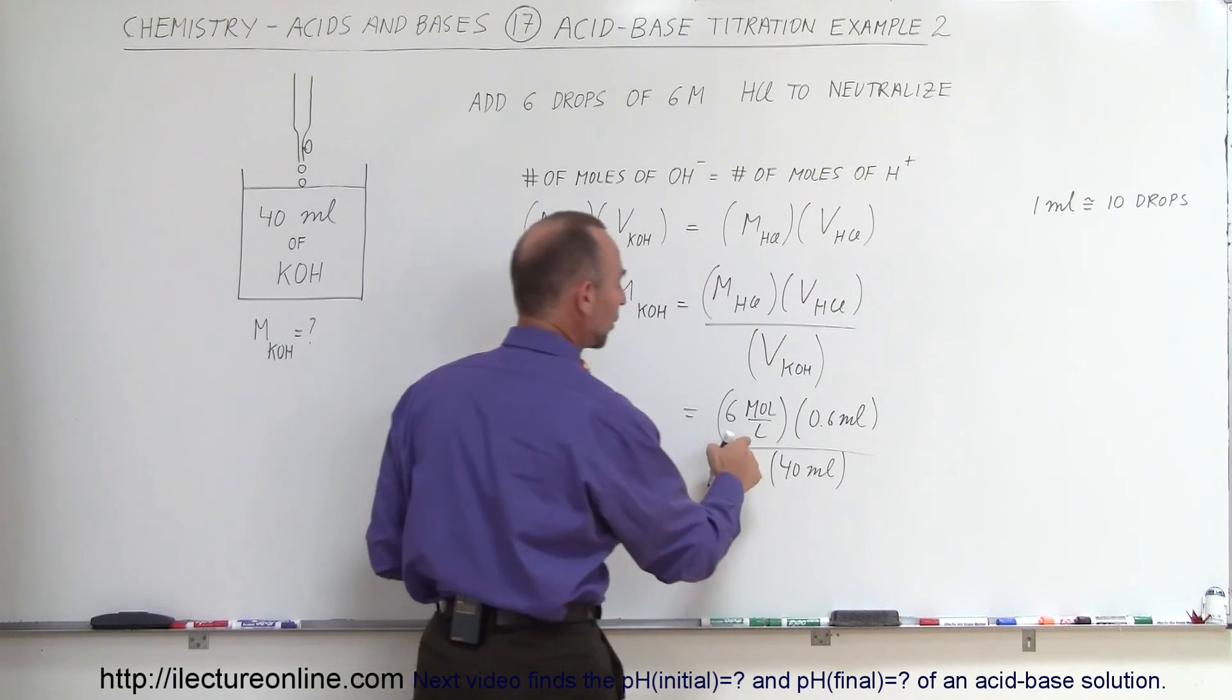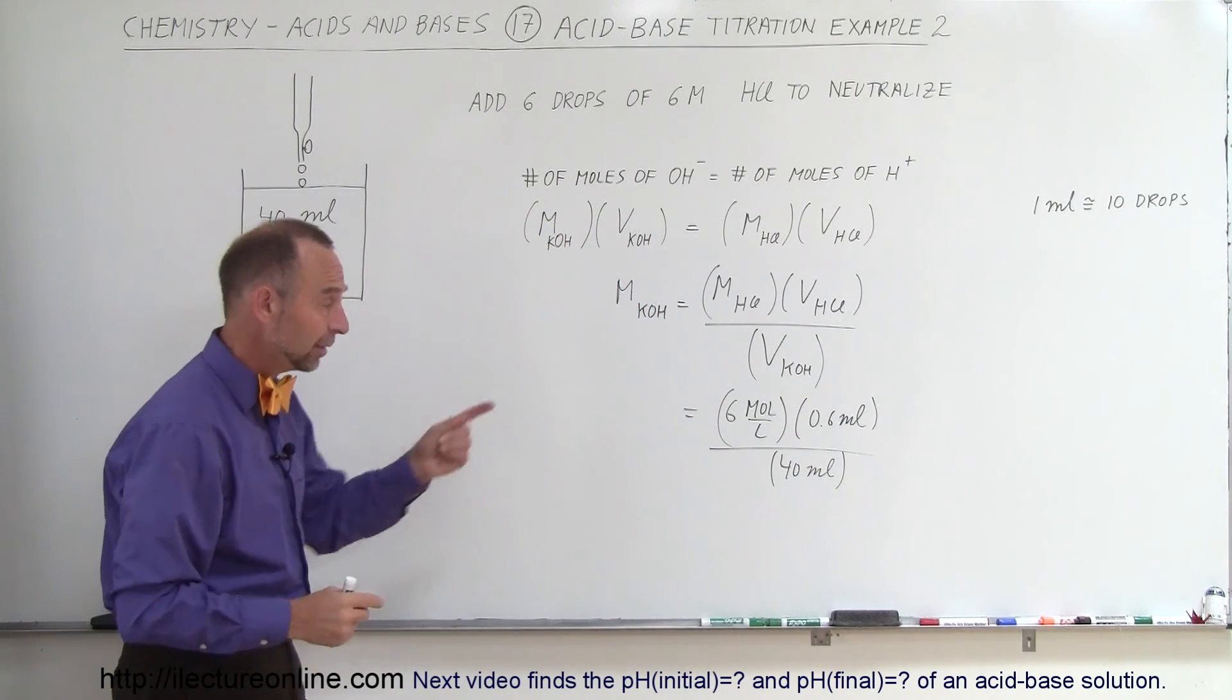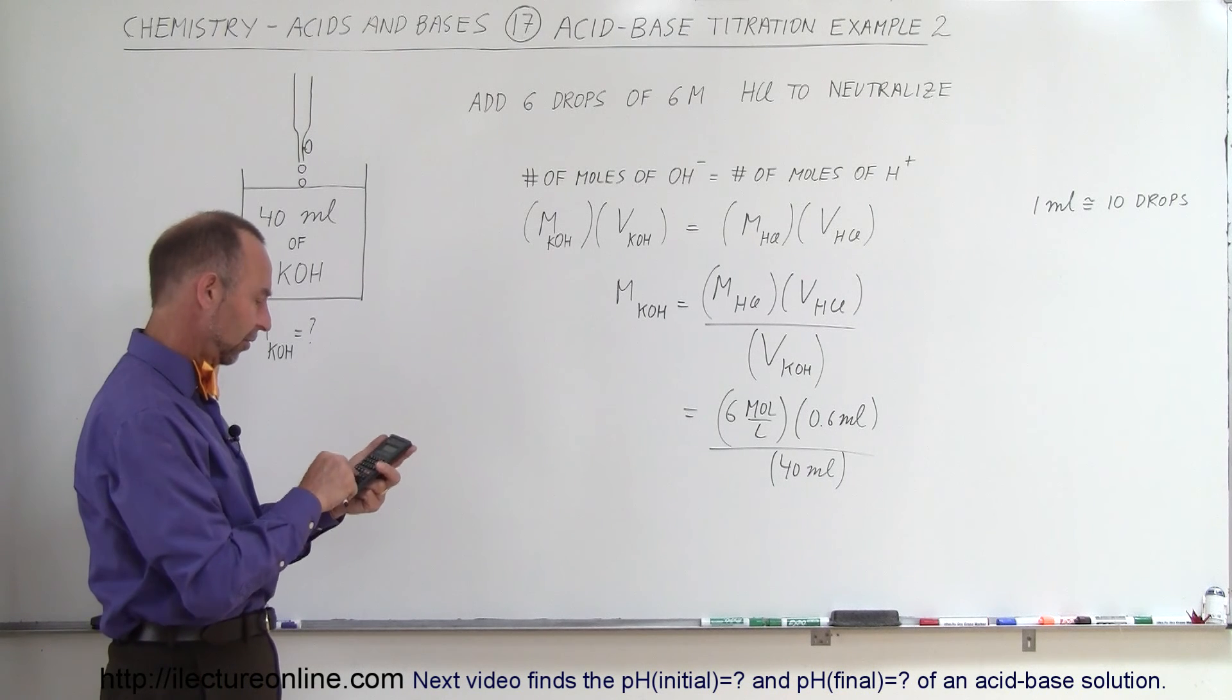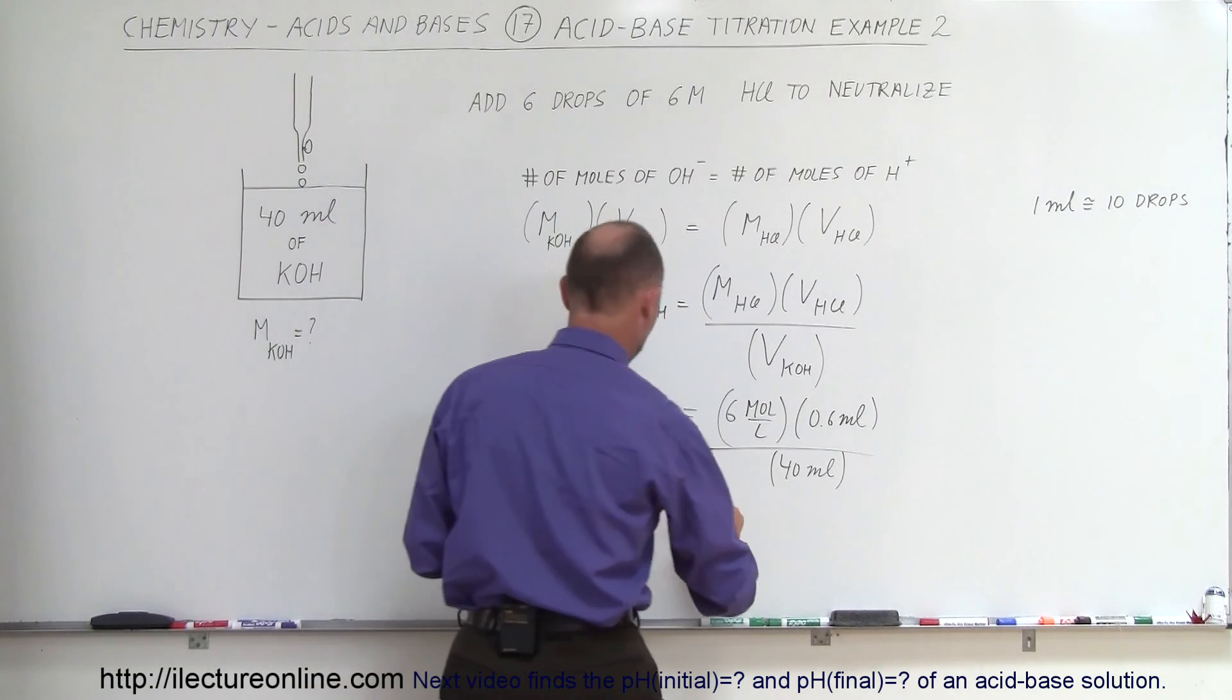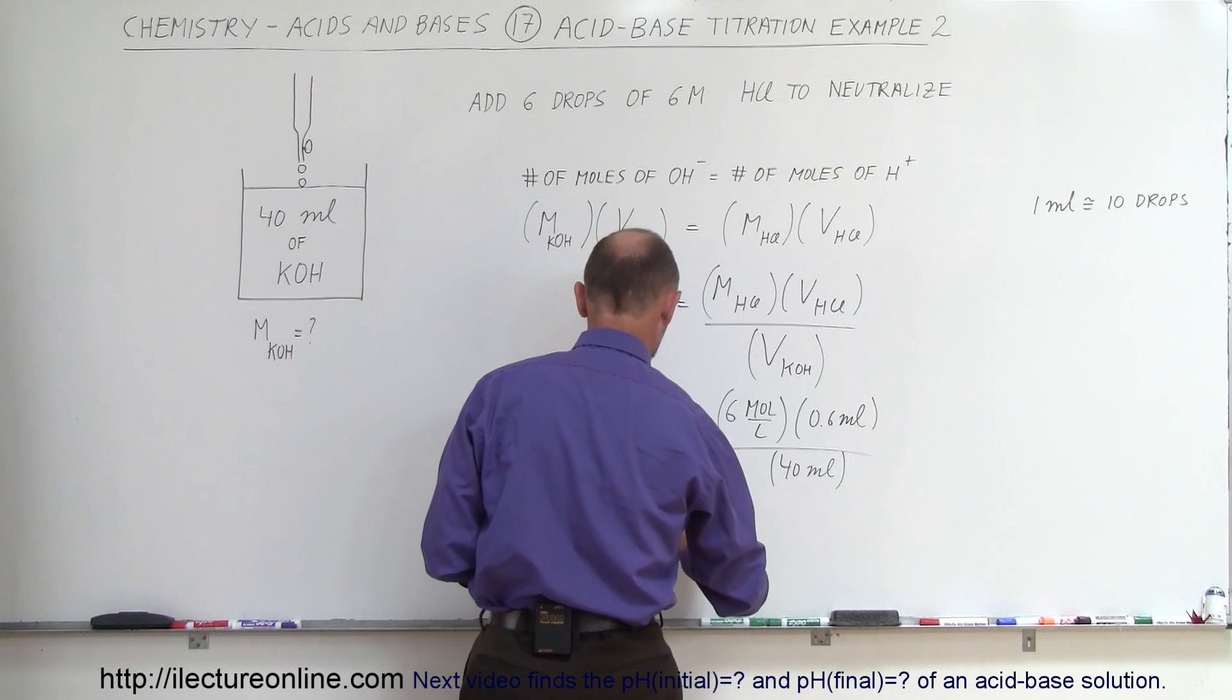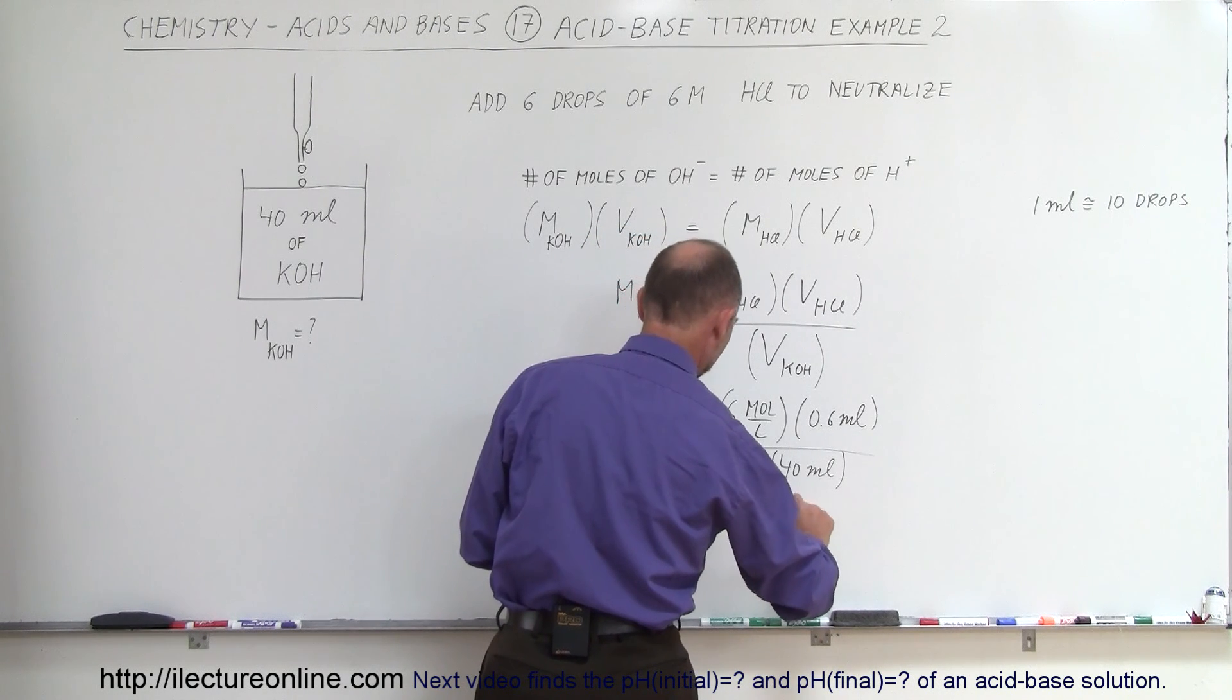Don't worry, we're mixing liters and milliliters, but since milliliters cancel out, it doesn't matter. And now with the calculator, we can figure out what the final answer was. So six times 0.6 divided by 40, and we get 0.09. So the molarity of the potassium hydroxide we started with was equal to 0.09 moles per liter.